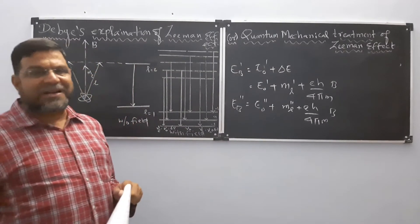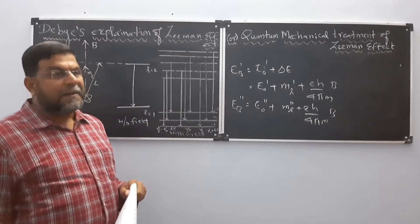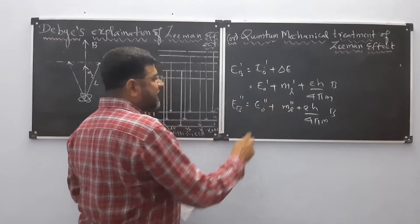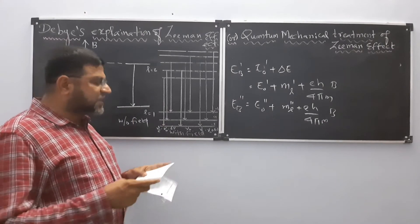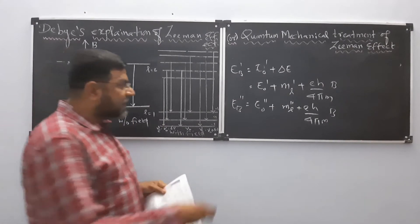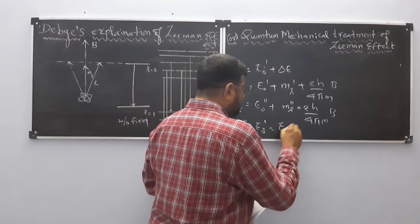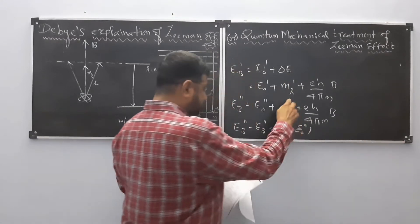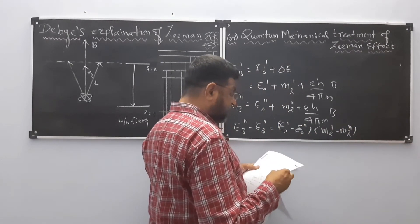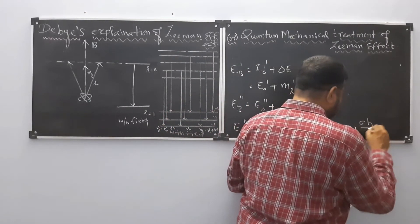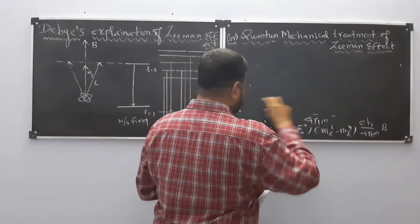Since Planck's constant, the magnetic field, the charge, and the mass of the electron are all constants, only the magnetic quantum numbers and the ground state energies change. The difference between the two energy equations gives E''B − E'V = (E₀' − E₀'') + (ΔML) × (eH/4πm) × B, where ΔML is the change in magnetic quantum number.